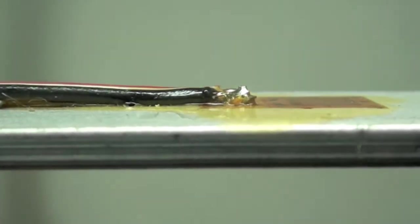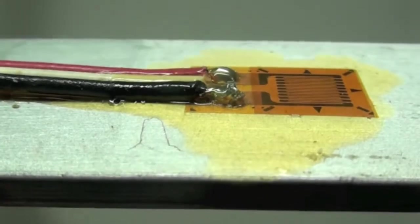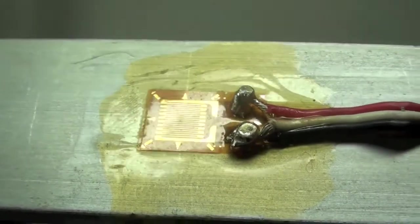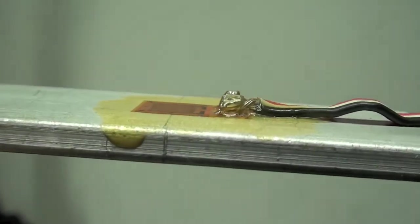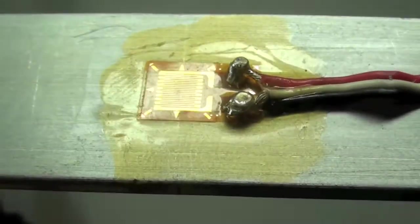The solder joints should be smooth and rounded. Sharp peaks or excessive solder should be avoided. This can be corrected by retouching the solder joints with a solder pencil and some additional flux.